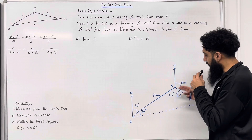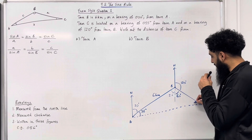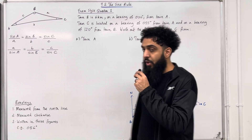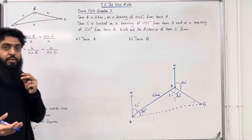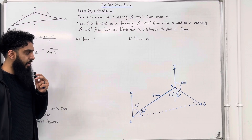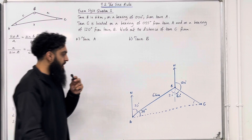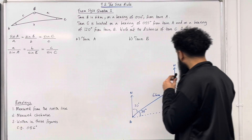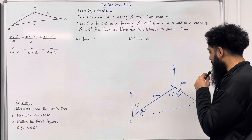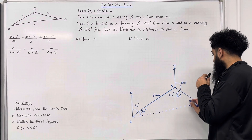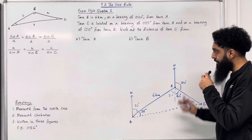So we've got 80 degrees here and 35 degrees here. We can work out this particular angle because angles in a triangle add up to 180 degrees. So we do 180 take away 35 take away 80, which gives us 65 degrees.